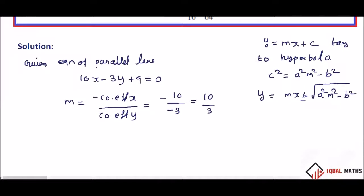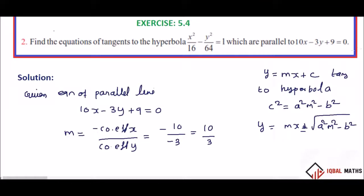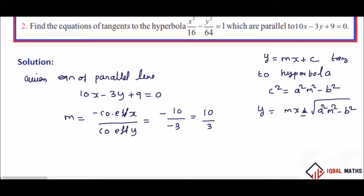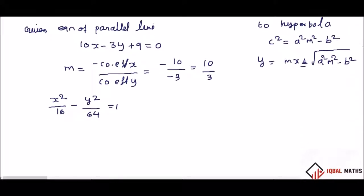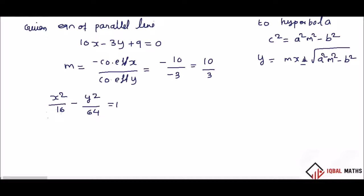Let us take the equation of the hyperbola: x² by 16 minus y² by 64 is equal to 1. For this hyperbola, a² is equal to 16 and b² is equal to 64.